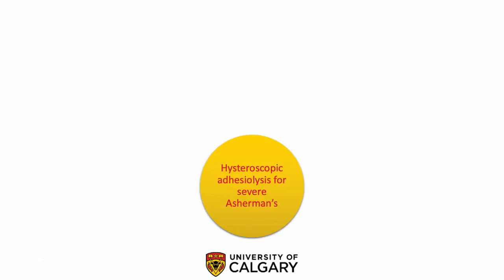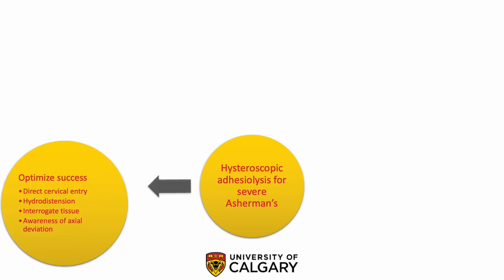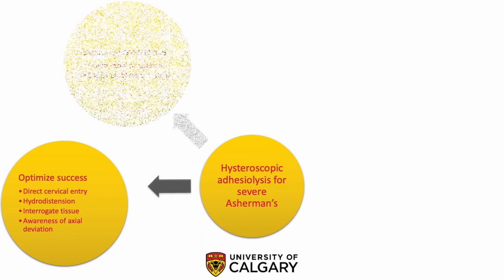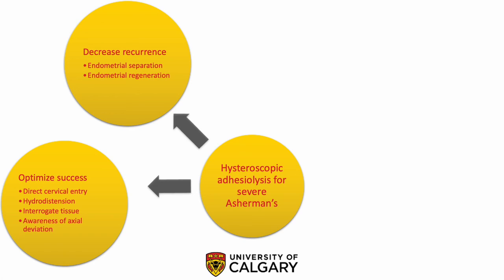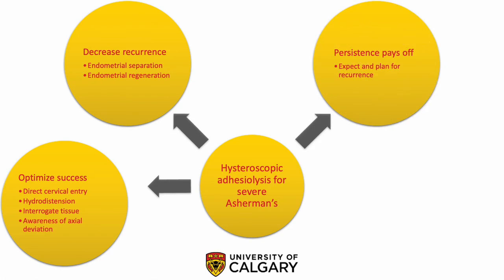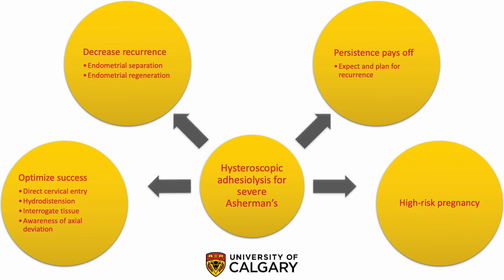In summary, we have presented a case of hysteroscopic adhesiolysis for severe Asherman syndrome where a repeat procedure resulted in a good outcome. We have described an approach to optimize success including direct cervical entry, hydrodistension, gentle interrogation of tissue, and awareness of axial deviation. We've described approaches to decrease incidence and severity of recurrence by promoting endometrial separation and regeneration. It's important to remember for both physicians and patients that persistence pays off and recurrence should be expected and planned for in severe cases. Finally, pregnancies after hysteroscopic adhesiolysis for severe Asherman syndrome come with significantly elevated risks, particularly of placenta accreta.